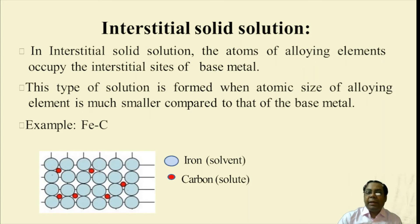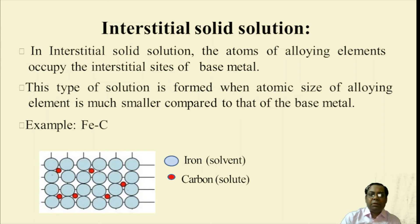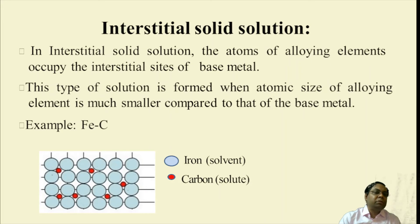The other type is interstitial solid solution. In this case, the atoms of the alloying elements are of very different sizes — one very large and the other very small. The interstitial sites of the base metal are utilized. This type of solid solution forms when the atomic size of the solute is much smaller compared to that of the base metal, like the iron-carbon system, where carbon atoms fit into the small gaps between adjacent iron atoms.